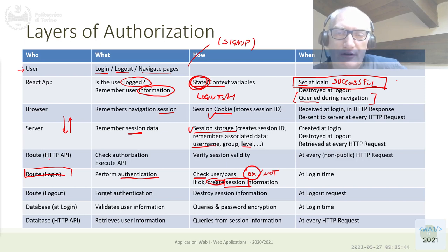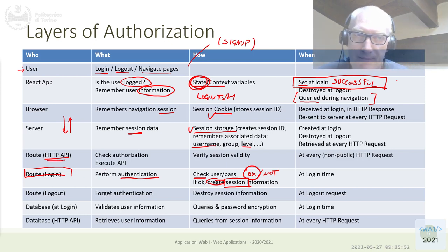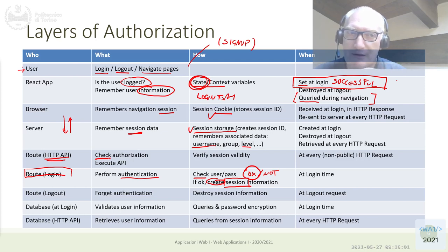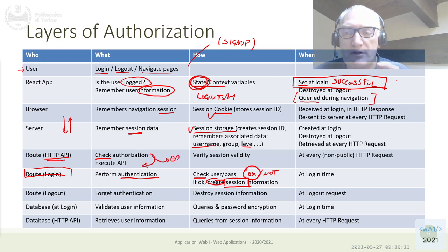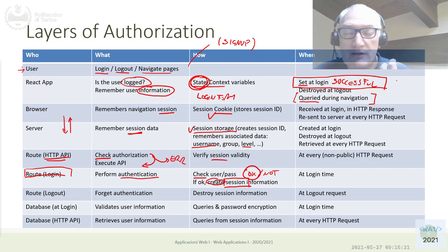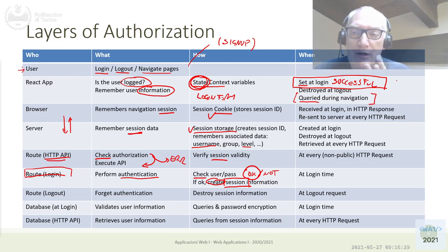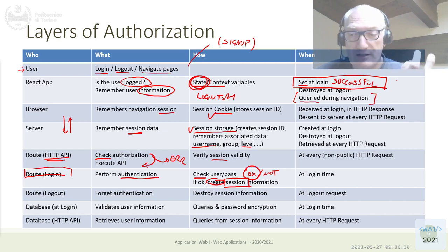At every new call, the server application needs to check whether the currently authenticated user in the current navigation session is authorized to call this HTTP API. If yes, execute the API; otherwise return an error saying the user is not authorized. This checks the information already inside the session — which is why we need to remember it after login. At every subsequent call, we check the information created and stored at login time to authorize each operation.